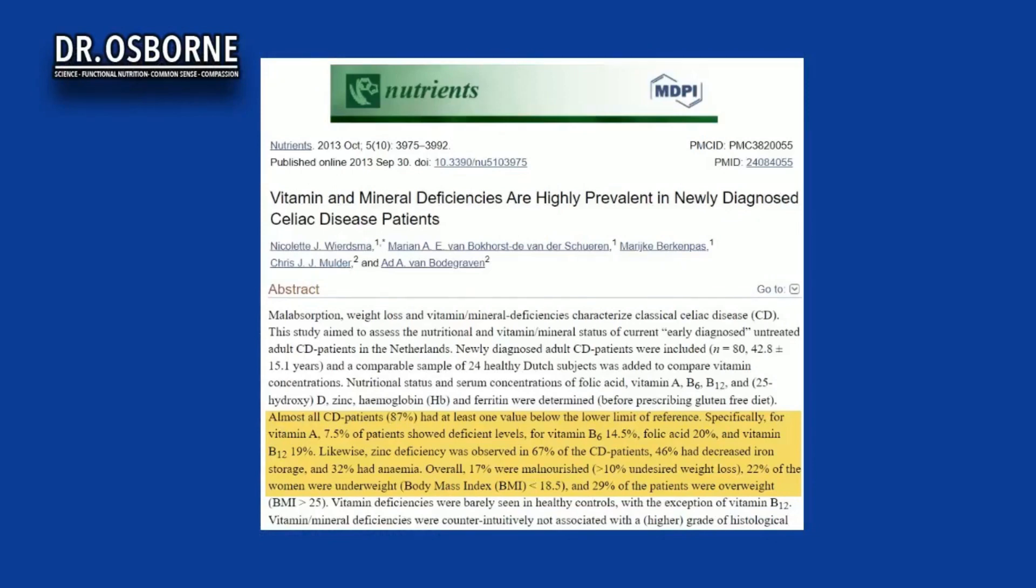Almost all of the patients, 87 percent, had at least one nutritional deficiency. Specifically, 7.5 percent had vitamin A deficiency. Additionally, 14.5 percent had B6 deficiency, 20 percent had folate deficiency, 19 percent had vitamin B12 deficiency, 67 percent had zinc deficiency, 46 percent had iron deficiency, and 32 percent had a nutritional anemia.